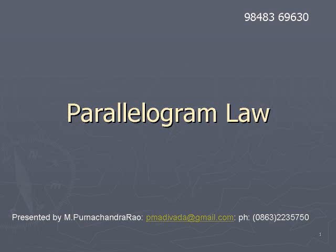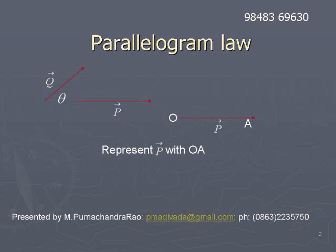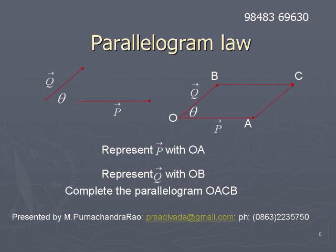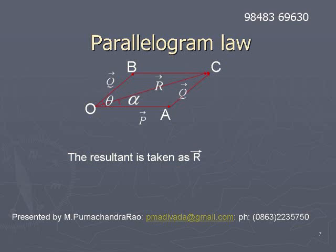Parallelogram law. To understand parallelogram law, let us take two vectors p-bar and q-bar. p-bar is represented by OA and q-bar is represented by OB, the two adjacent sides of the parallelogram. The parallelogram OACB is completed. The diagonal OC represents the resultant of these two vectors. The resultant of p-bar and q-bar is taken as R-bar.